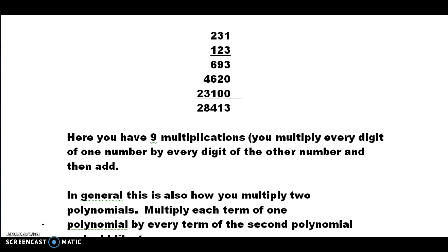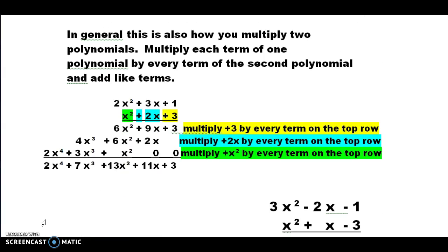On the next page where we looked at those multiplications, we had nine multiplications essentially. We drew our line and added. So what we're going to do is take a look at, instead of digits, we're going to have polynomials here in their place. If you look at the coefficients of each one of those terms, it's 231 and 123, identical to what we had in just multiplying the digits up above.